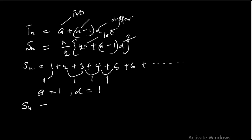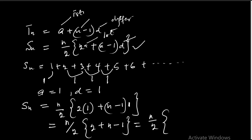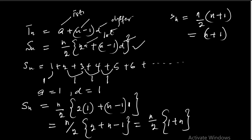So I can now interpret S of n as the summation, which is the same as n over 2 into 2 times a, where a is 1, plus n minus 1 into d, where d is 1. Closing the brackets gives S of n equals n over 2 into 2 plus n minus 1, which simplifies to n over 2 into n plus 1. Whichever way you write it — n plus 1 into n over 2 — it's the same thing.